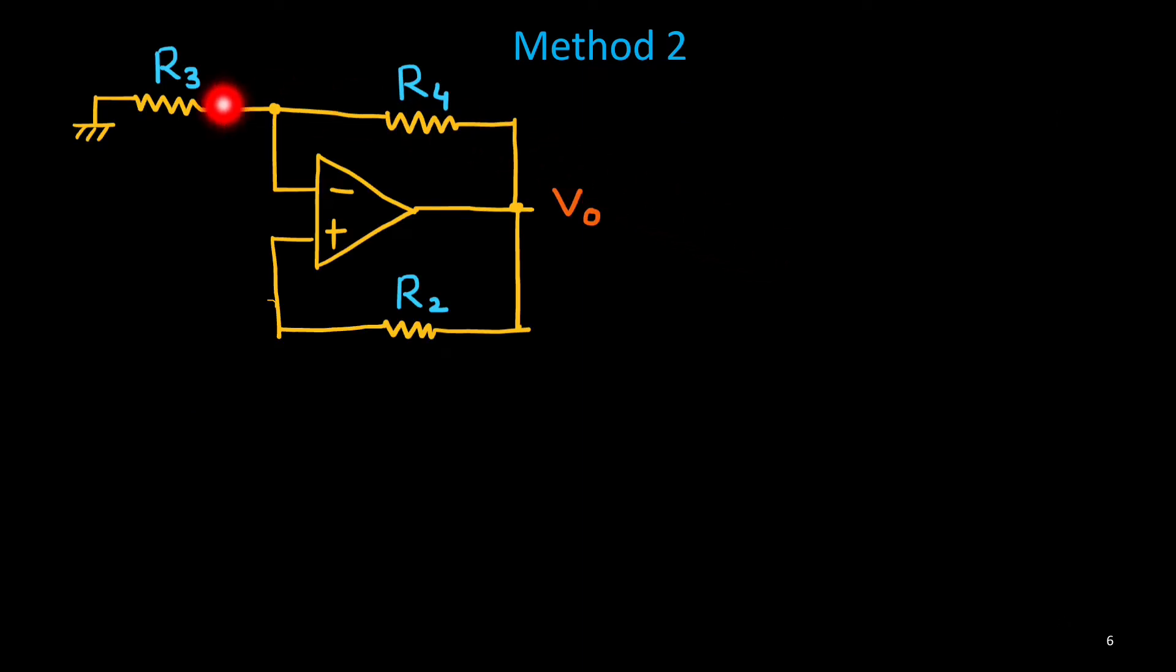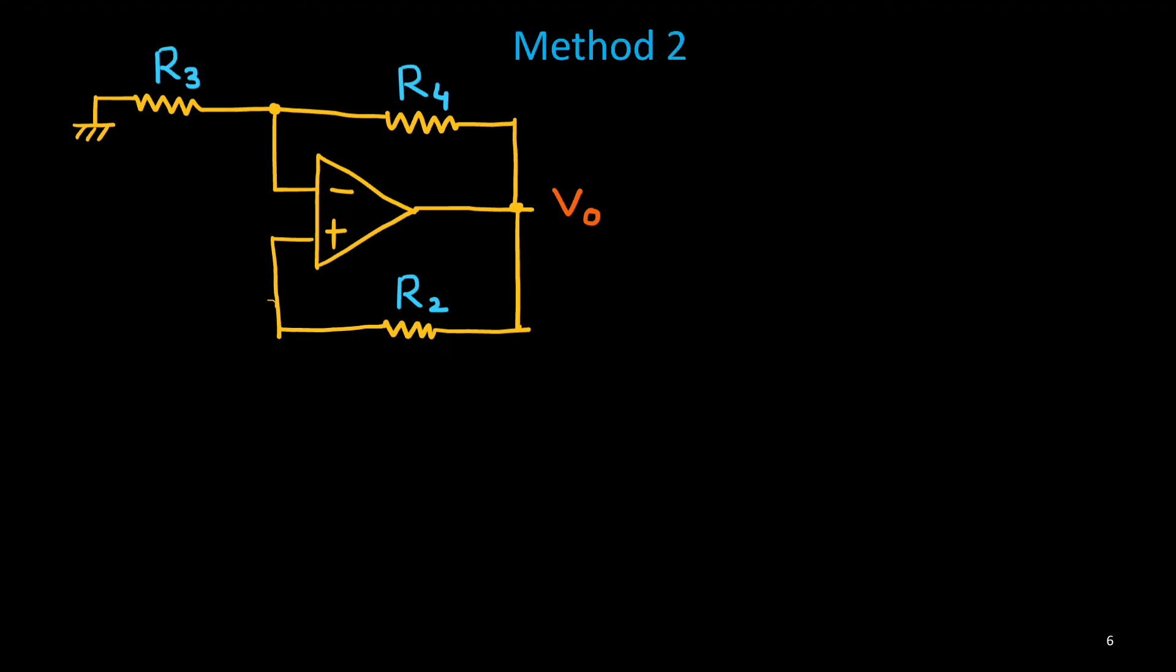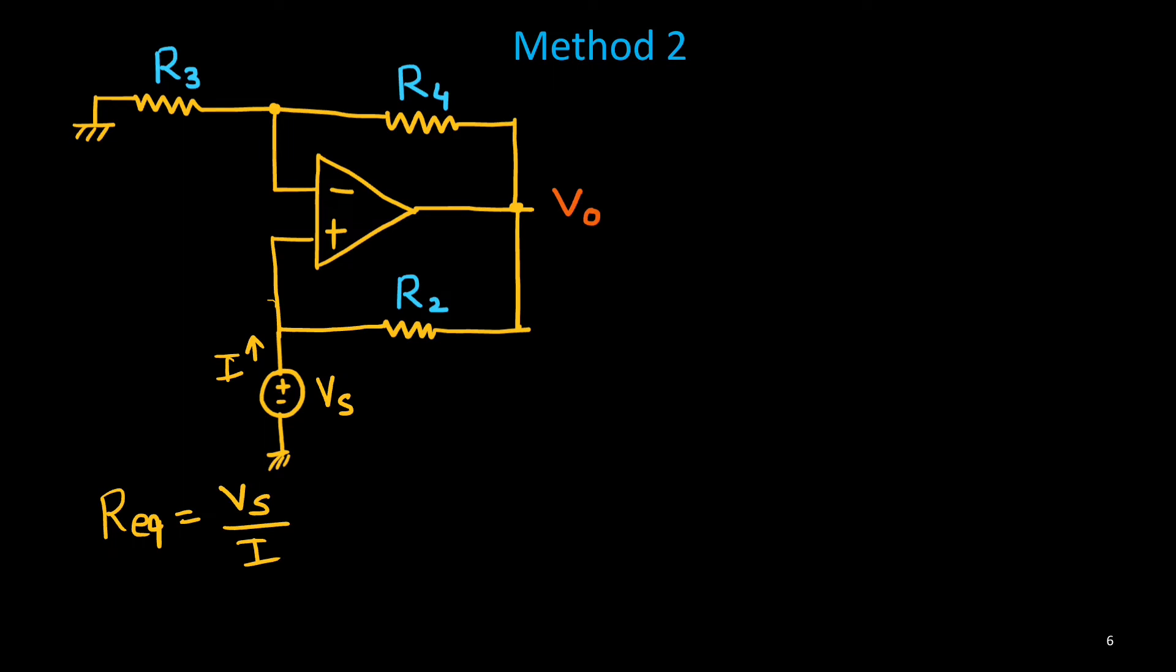Now, this is circuit. So, from this point to this point, the R equivalent we have to calculate. To calculate this one, what we will do? We will connect one source, Vs at that point. So, from ground to this point, one source is connected, Vs. And suppose the current I is supplied by this source, then equivalent resistance of this network will be simply R equivalent equal to Vs upon I. That is equivalent resistance.